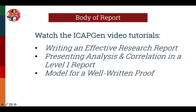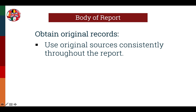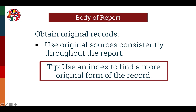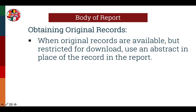The next section covers the specific requirements for writing the body of the report. An important requirement for the Level 1 project is to obtain and use original records to prove the generational linkages. Make sure that original sources are used consistently throughout the report when available. Indexes should not be relied upon; instead, use the index to find a more original form of the record, such as a clerk's copy of the marriage record in a county court book, or a digitized marriage certificate. An index will often give film numbers or certificate numbers that will help locate the more original record.